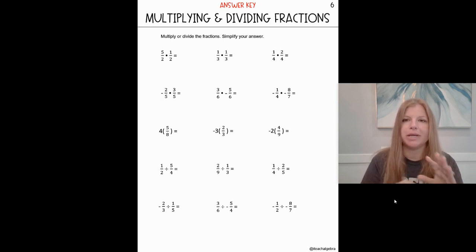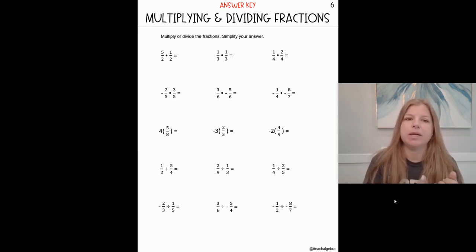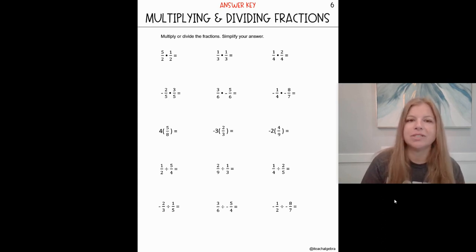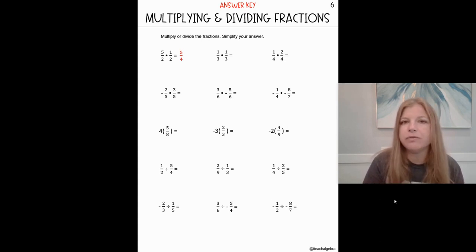All you simply do is multiply straight across. So when I look at this first one, it says five halves times one half — five over two times one over two. All I simply do is multiply across my numerators and multiply across my denominators. Five times one is five, two times two is four, and that's my answer: five fourths. I can't simplify that answer. I'm always going to check to see if I can simplify before going further, but that is absolutely it.